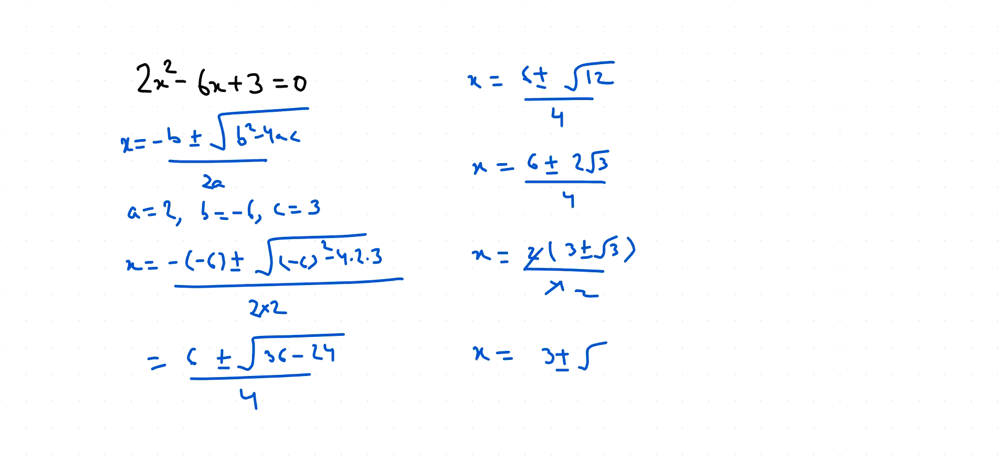So the two roots are x₁ = (3 + √3) / 2 and x₂ = (3 - √3) / 2.